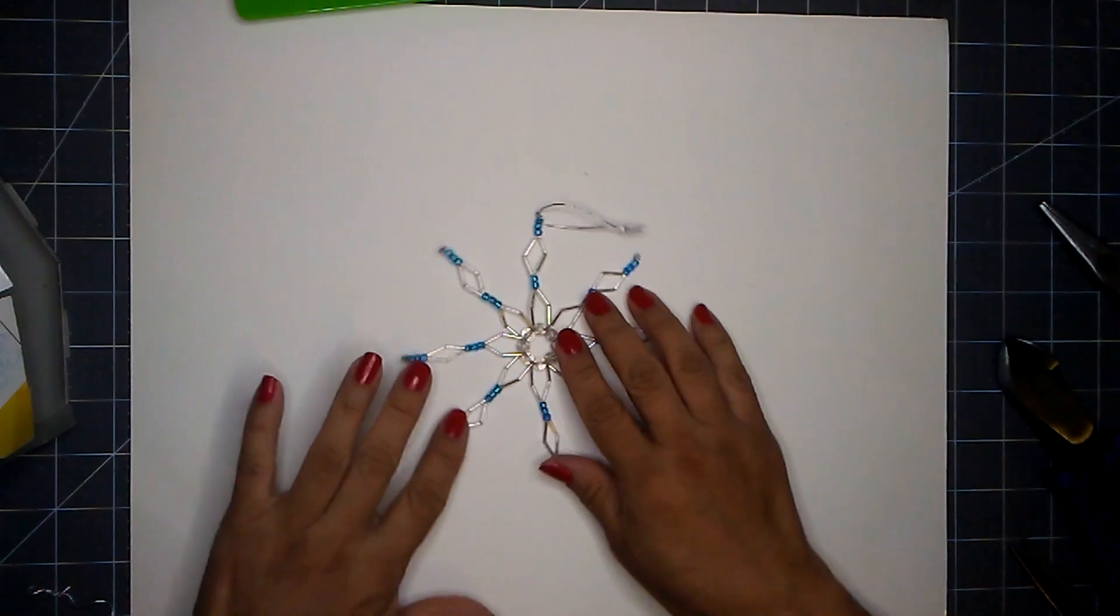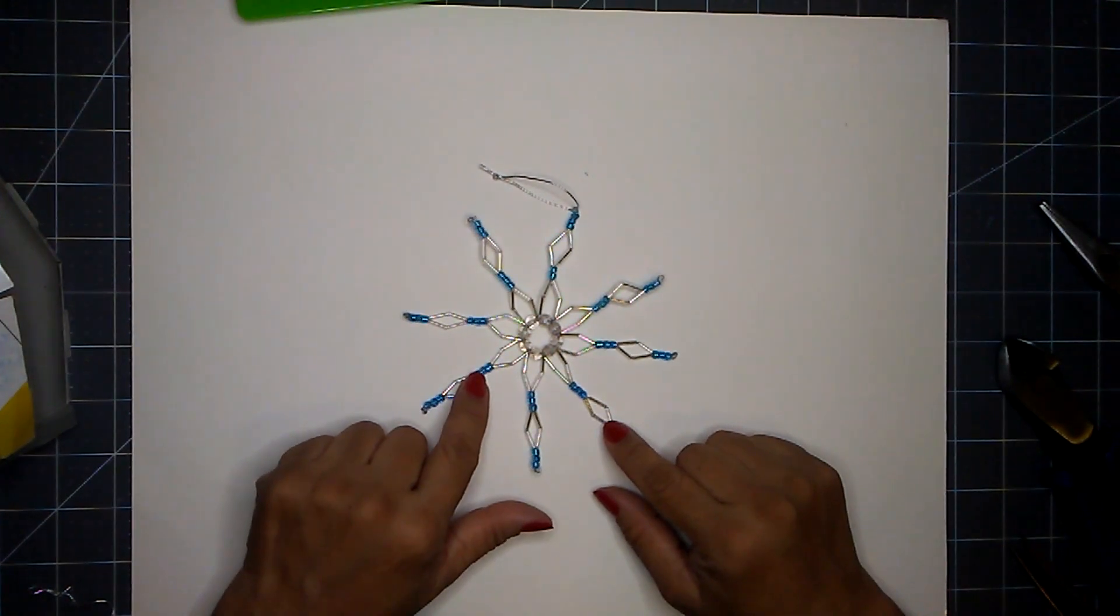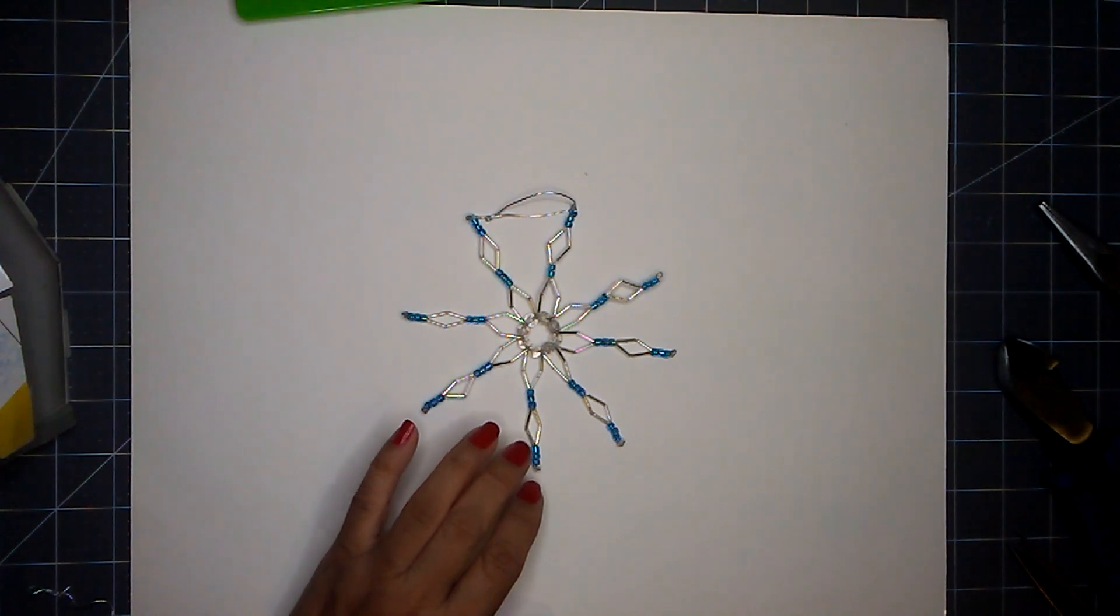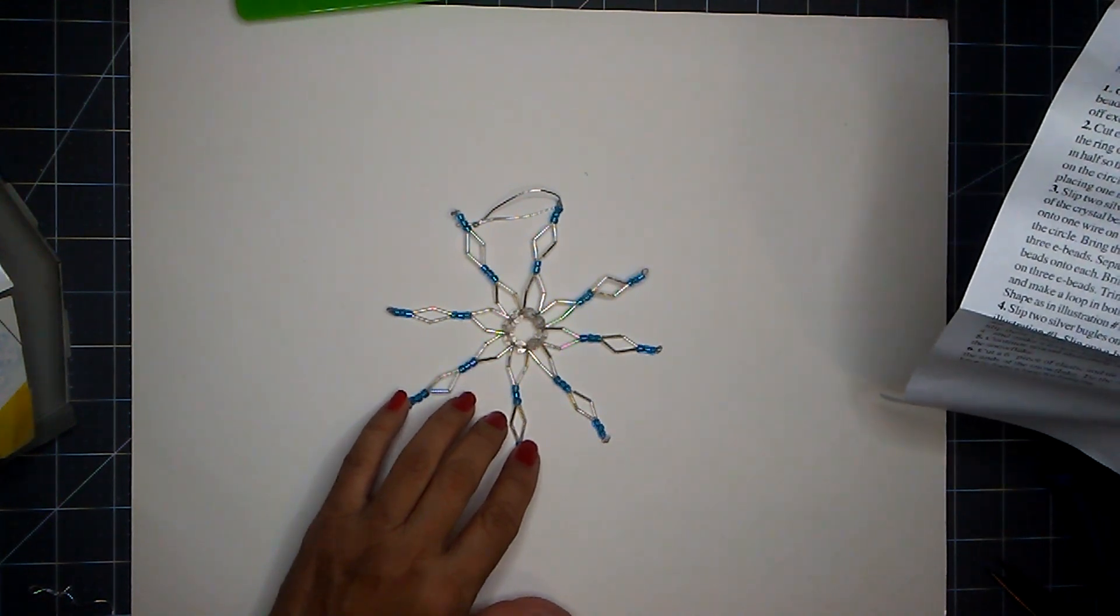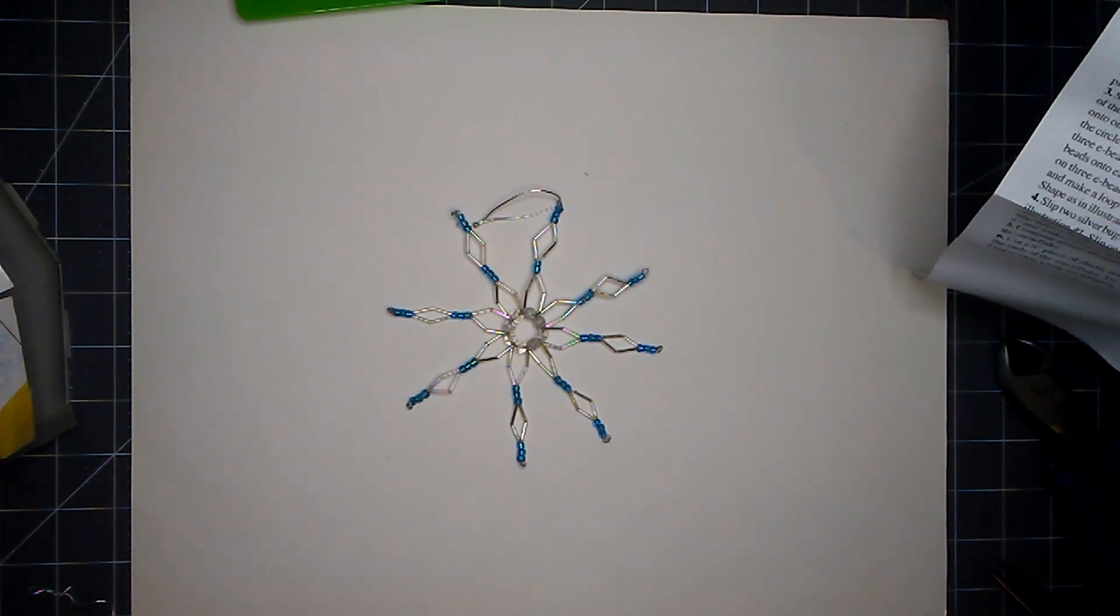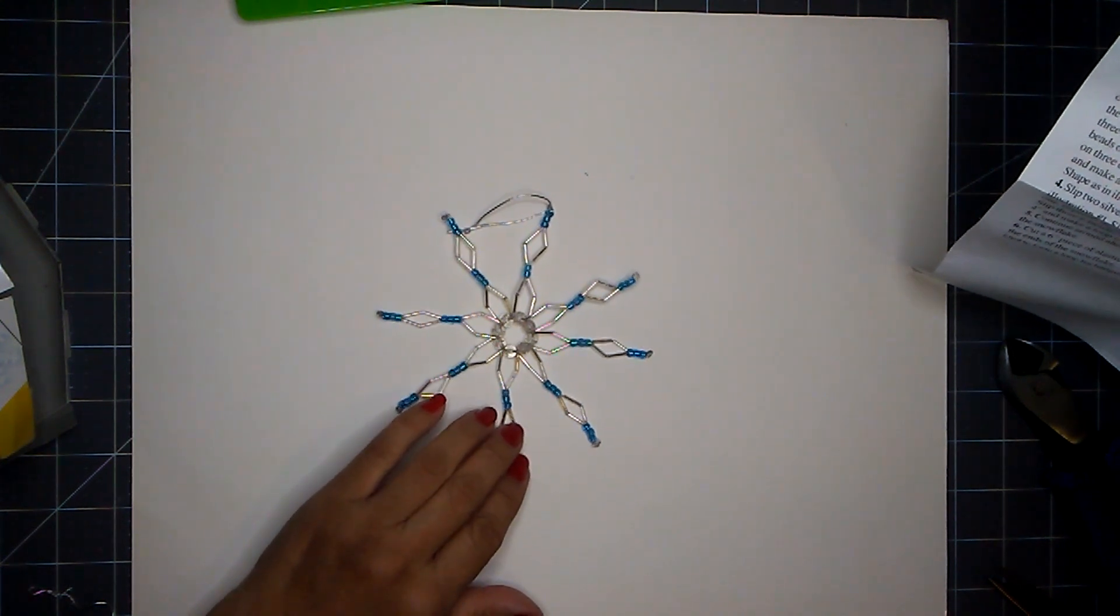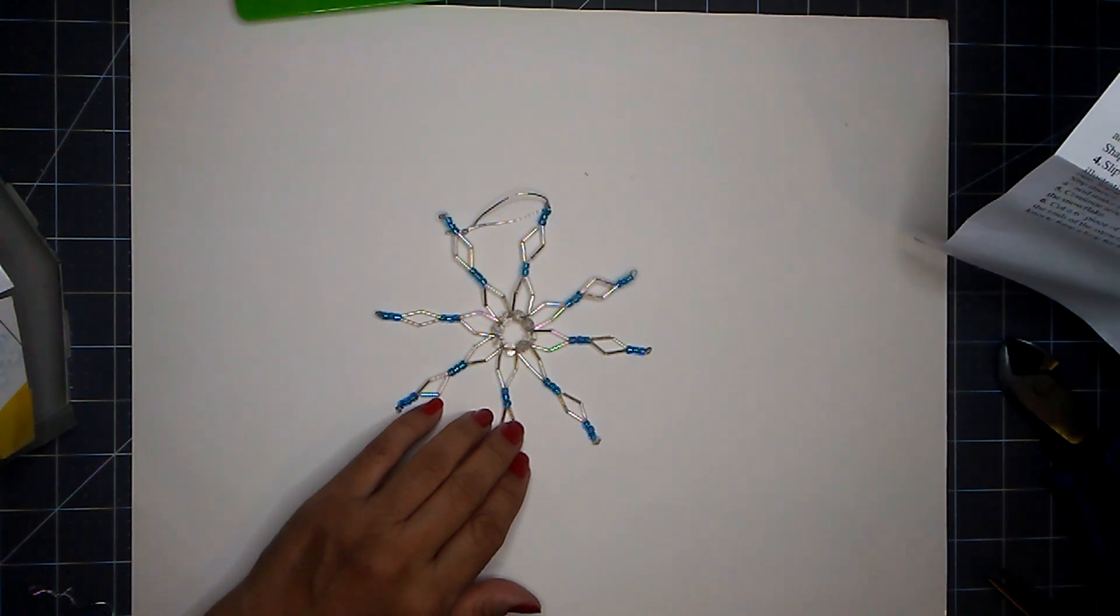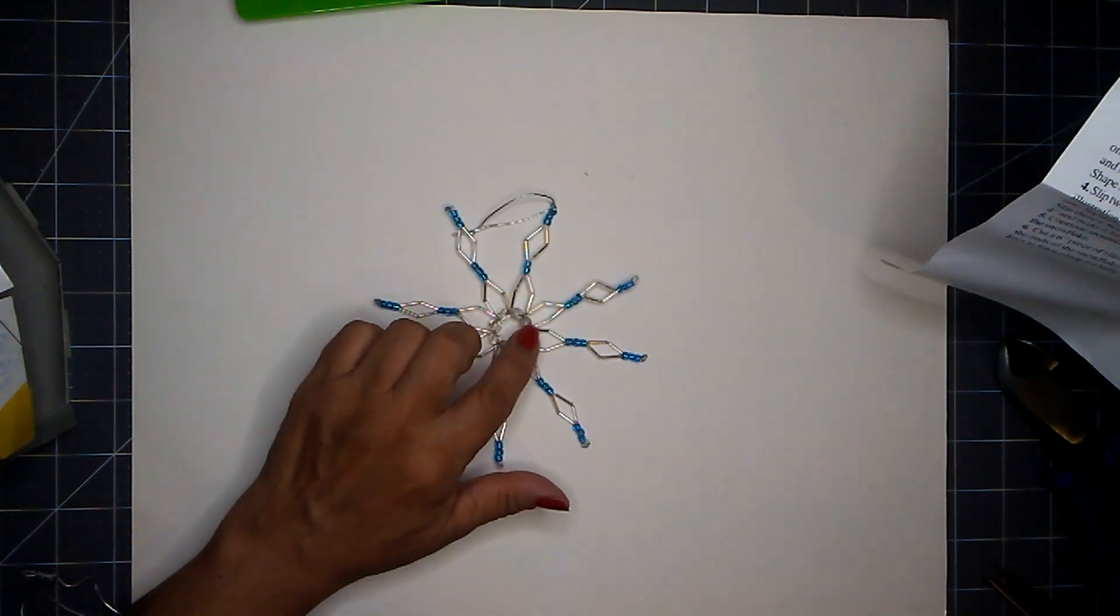I hope you liked this project today and that you give it a try. Again, go to your craft store and pick up some bugle beads, some large seed beads, and some round beads. And again, the supplies you need is one spool of 24 gauge silver wire, one yard of silver elastic cord. And if you plan on making six of these, you're going to need 384 crystal bugle beads, 240 turquoise seed beads, and you're going to need 48 of these six millimeter beads.